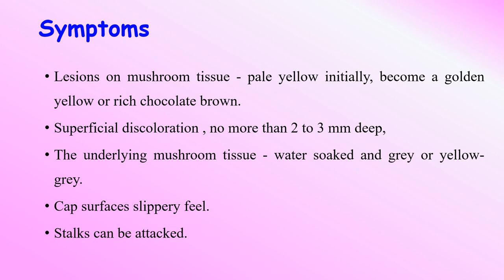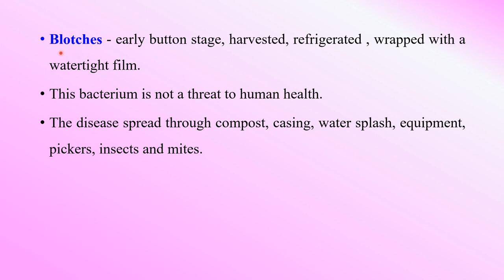The symptoms of bacterial blotch: lesions can appear on mushroom tissues, and the color starts with pale yellow and becomes golden yellow to rich chocolate brown. The superficial discoloration is no more than 2 to 3 millimeters depth of mushroom tissue. The underlying tissues, when cut, look watery, soapy, and gray or yellow-gray in color. The cap consistency will be slippery, and the stalk can also be affected. Bacterial blotches may appear during the entire growing period of the mushroom.